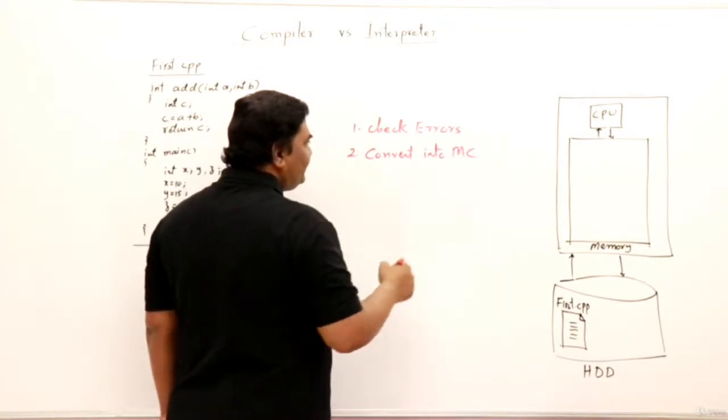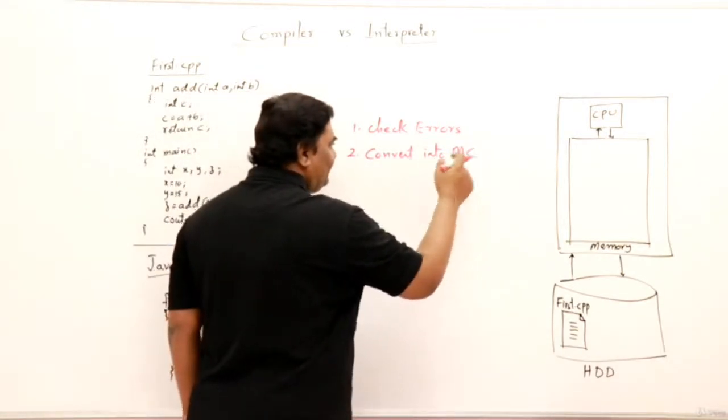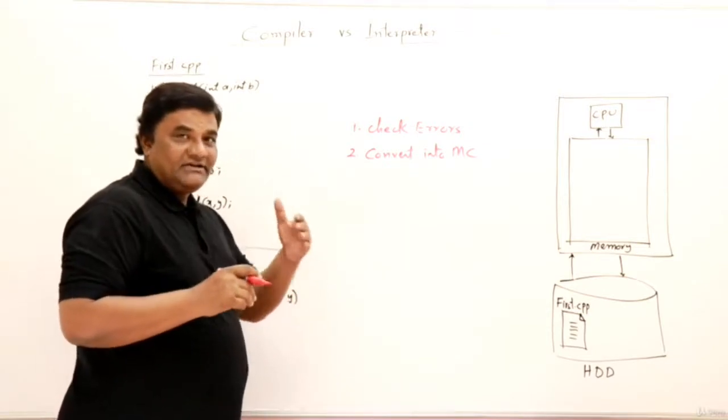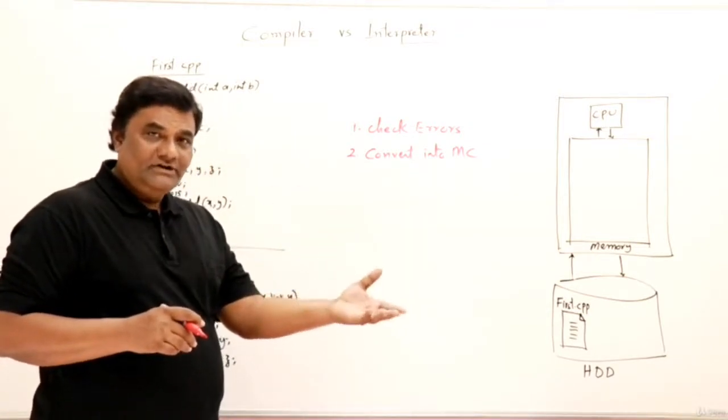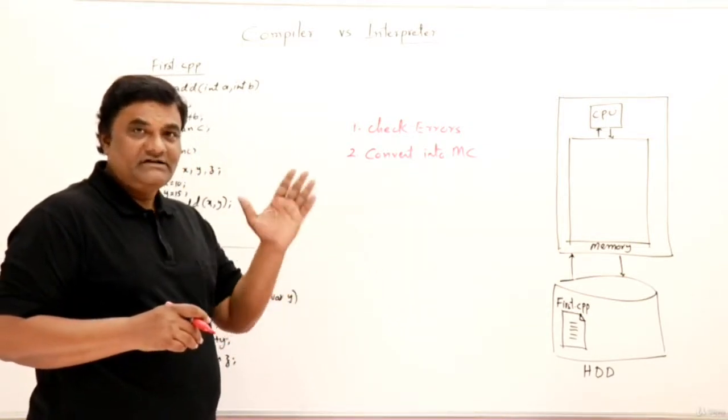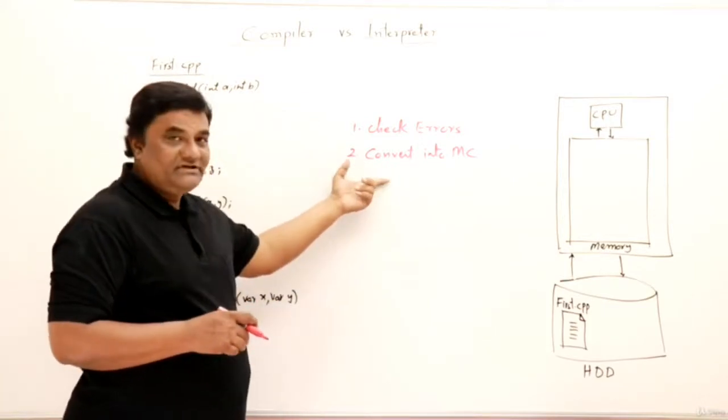High level language gets converted into low level language, that is machine code, which is understandable by machine. Compiler and interpreter do this job of conversion.